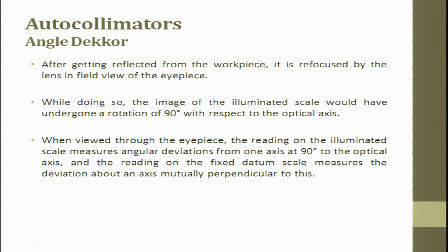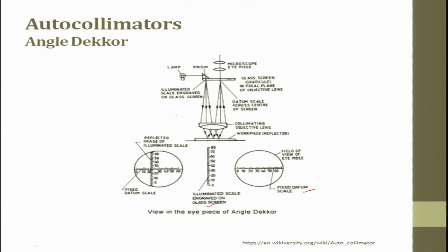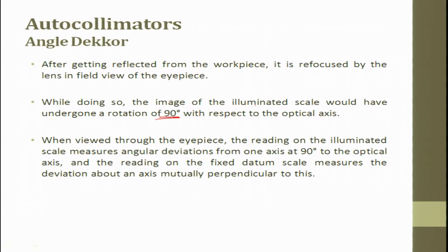After getting reflection from the workpiece, the beam is focused by the lens in the field of view of the eye. In doing so, the image of the illuminated scale undergoes a rotation of 90 degrees. That is why you see both the fixed datum and the reflected datum in the field of view of the eyepiece. When viewed through the eyepiece, reading the illuminated scale measures angular deviation from one axis at 90 degrees to the optical axis, and reading the fixed datum scale gives the deviation about a mutually perpendicular axis.